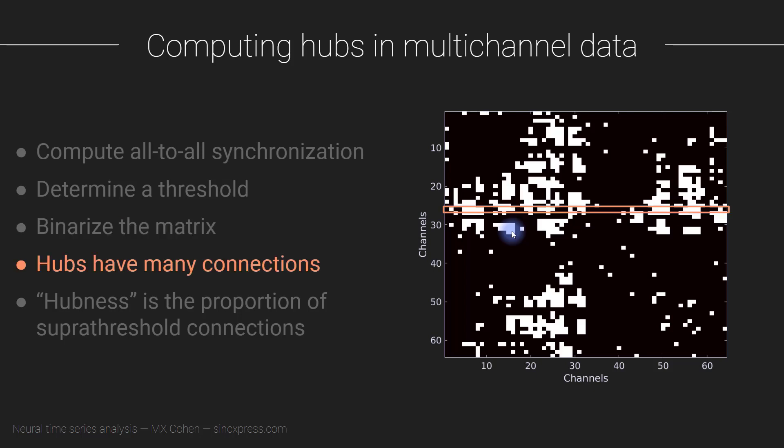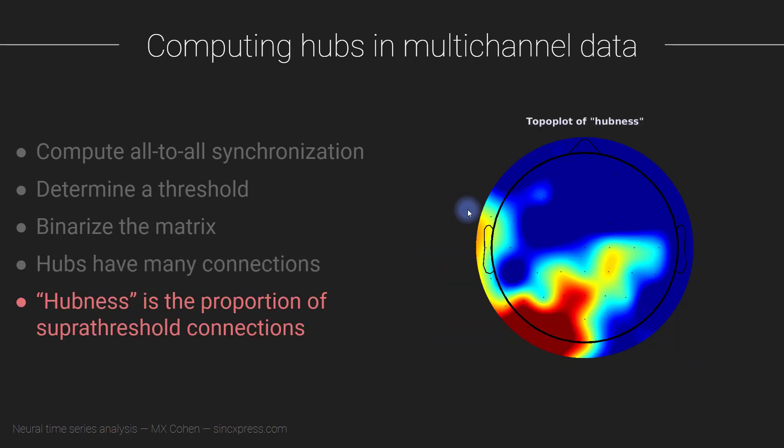The next step considers the assumption that a hub has a lot of connections, just like in the graph I showed earlier. Hubs have a lot of connections to other electrodes. For each electrode, like electrode 26, you sum up all these connections - how many other suprathreshold connections are there between channel 26 and all the other channels.